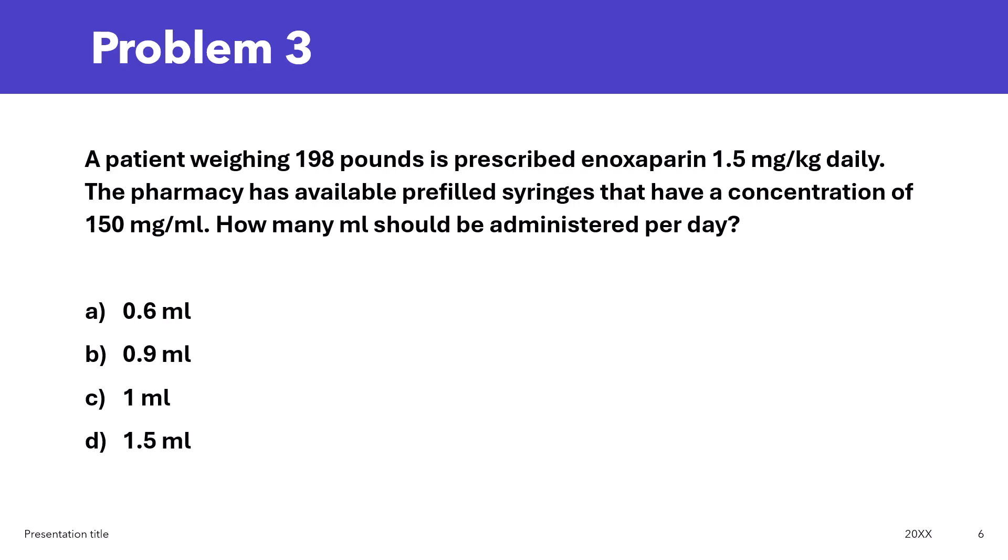This is our last problem. A patient weighing 198 pounds is prescribed enoxaparin, 1.5 mg per kg daily. The pharmacy has available pre-filled syringes that have a concentration of 150 mg per ml. How many ml should be administered per day? Again, pause the video, try to solve the problem, drop your answer in the comments below, and then we'll break it down together.